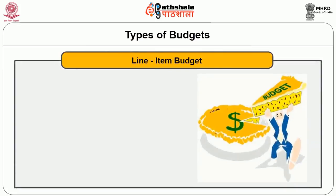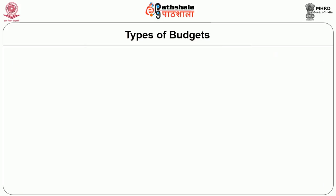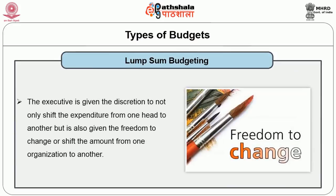Sixth, Line Item Budget — it is also known as traditional budget. In this type, all the items and corresponding expenditure is shown in separate lines and the legislature either approves or disapproves the individual items. Once approved, no alteration in any of the two is allowed, howsoever small it may be. Moreover, no significance is attached to the achievements and performance. Seventh, Lump Sum Budgeting — in this type, the executive is given the discretion to not only shift the expenditure from one head to another, but is also given the freedom to change or shift the amount from one organization to another. Advocates of this type put forward the idea that this makes the executive use funds more judiciously.